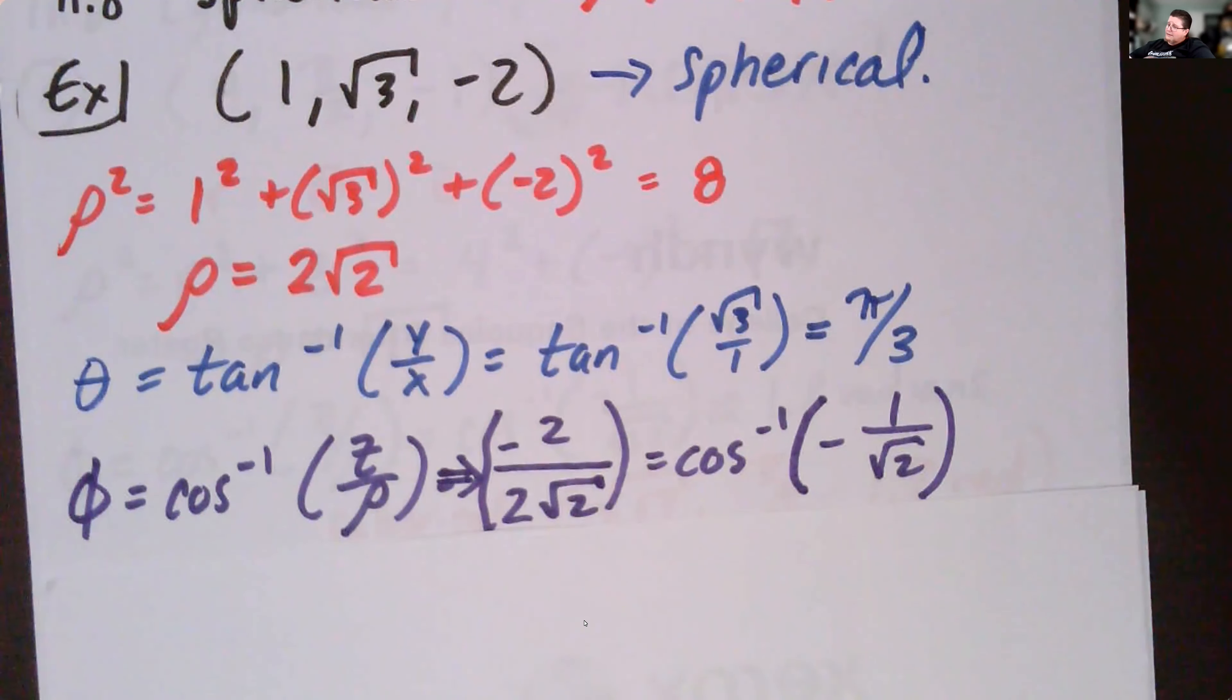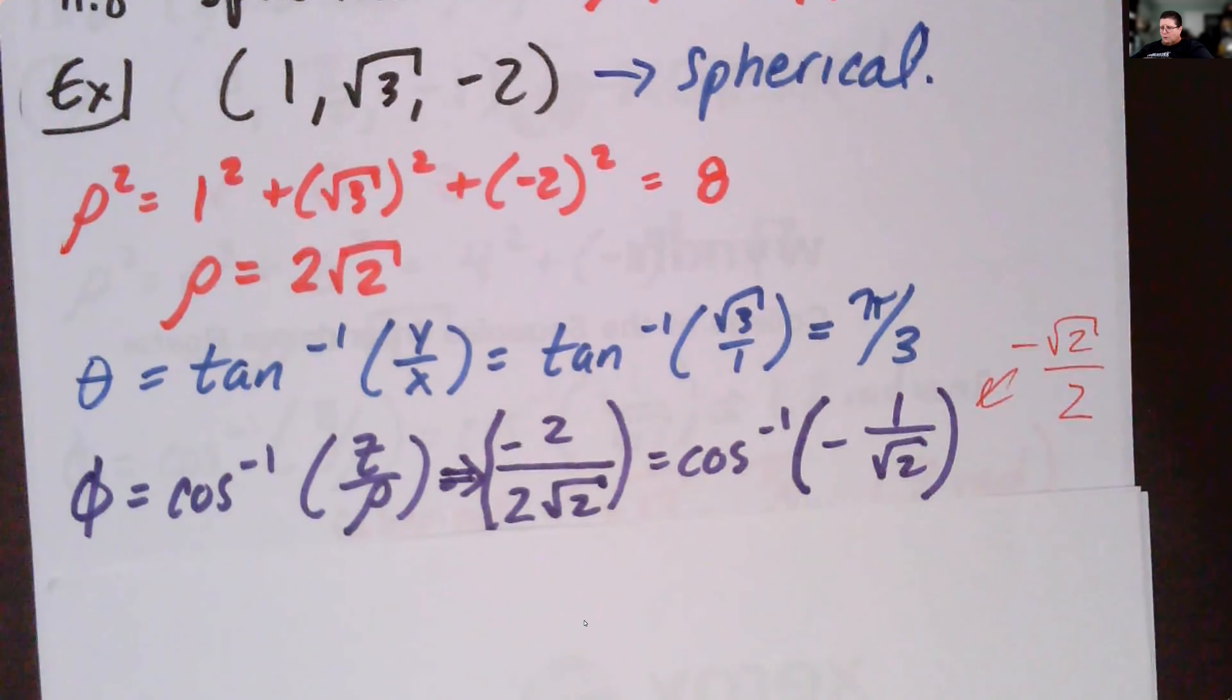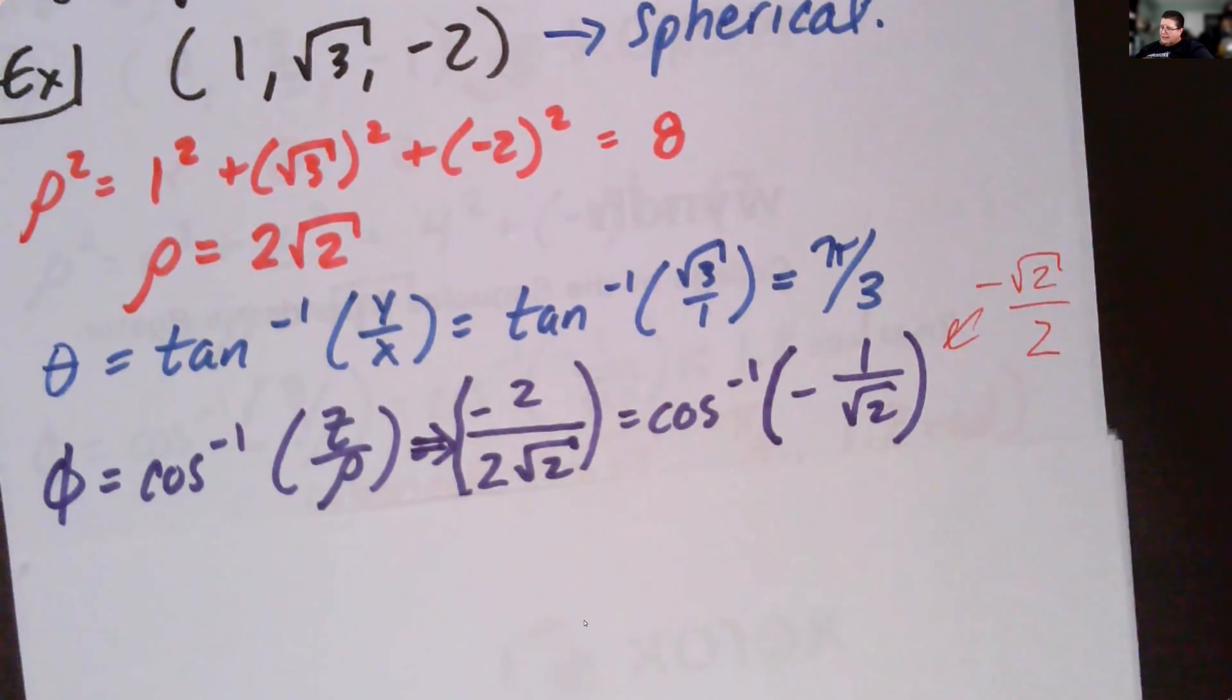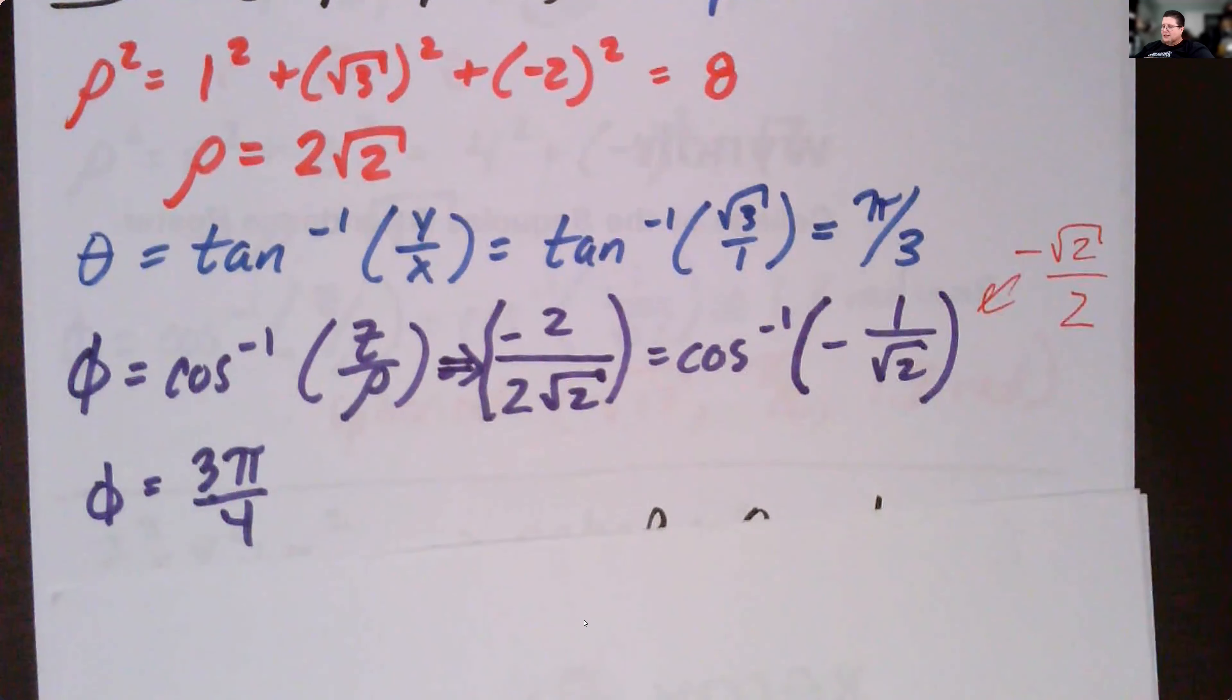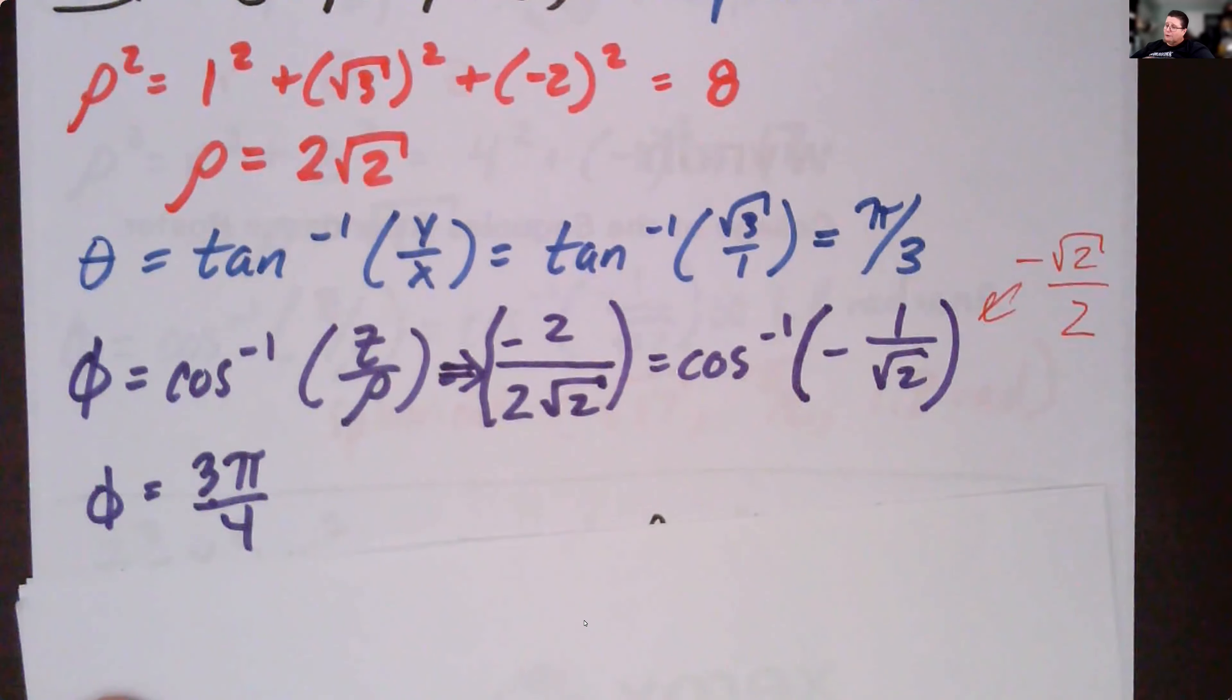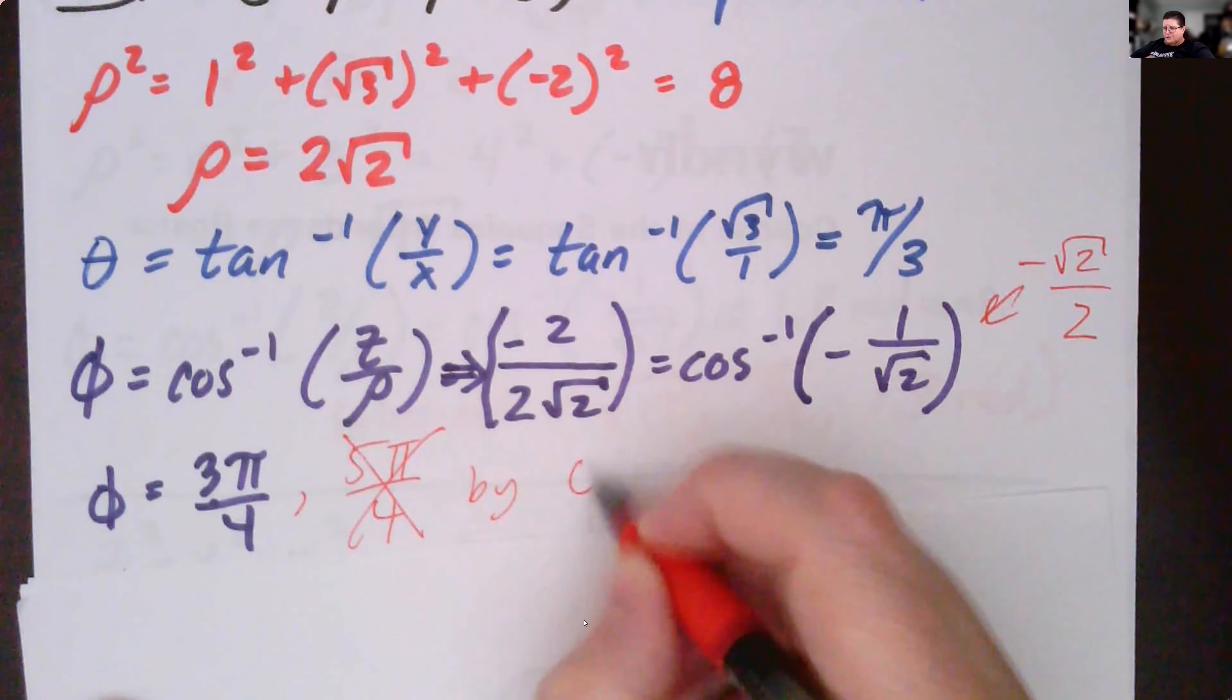Keep in mind this is negative root two over two when we rationalize it inside there. That happens along one of the 45 degree lines, the pi over four lines. With it being negative it occurs at phi equals three pi over four and five pi over four. But phi is restricted. Phi is restricted to being less than pi, so we ignore the five pi over four by the restrictions.